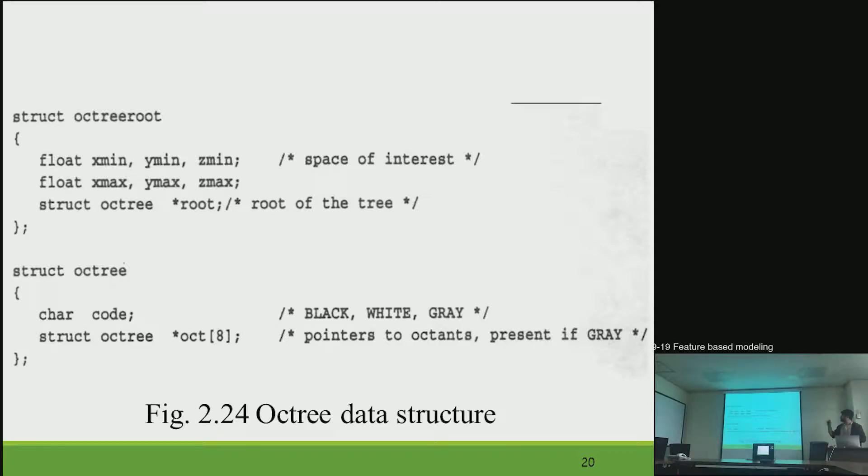In the data structure, we only deal with gray. This is a pseudocode, but we deal with white and black in a separate code and gray in a separate code, like a filter.